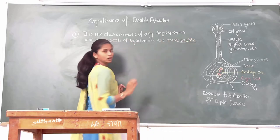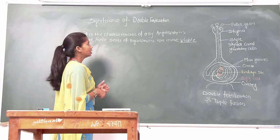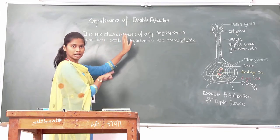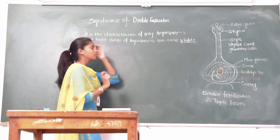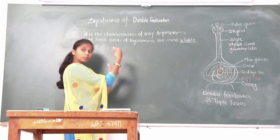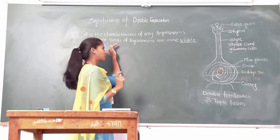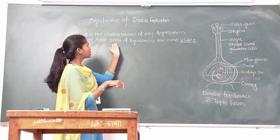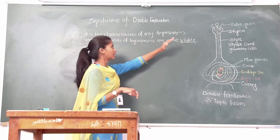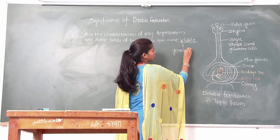What is meant by viable? The term viable can be referred to germination. So the seeds of angiosperms are more viable due to the occurrence of double fertilization. Viable means the germination capacity of the seed — the ability of a seed to germinate after being sown.